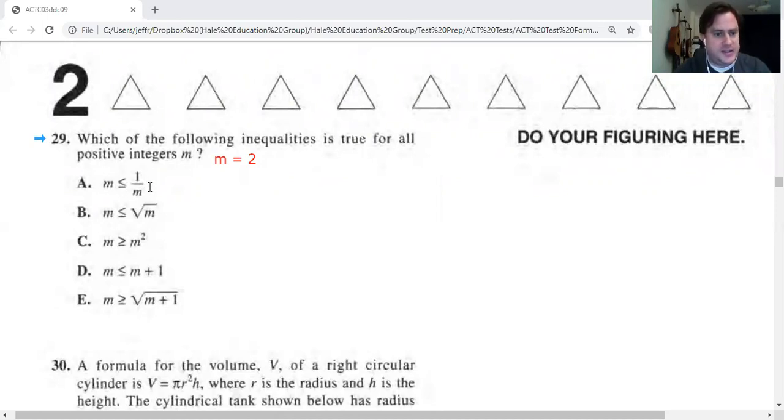So let's replace all the M's with 2 here. If we replace the M's in answer choice A with 2's, then we get 2 is less than 1 over 2. 2 is less than a half. Now is that true? Is 2 less than a half? No. So the correct answer cannot be answer choice A because we're looking for something that is true, which of the following is true.